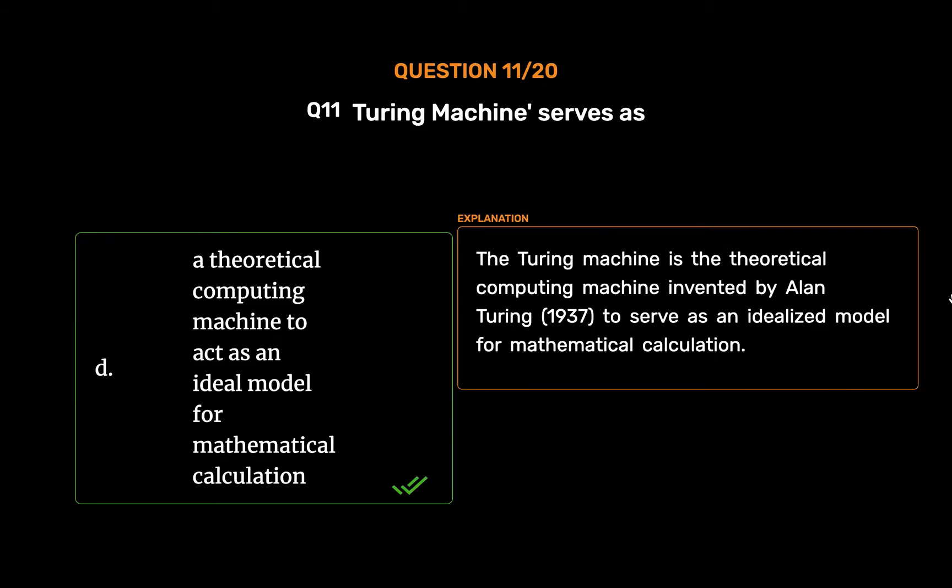The Turing machine is the theoretical computing machine invented by Alan Turing in 1937, to serve as an idealized model for mathematical calculation.